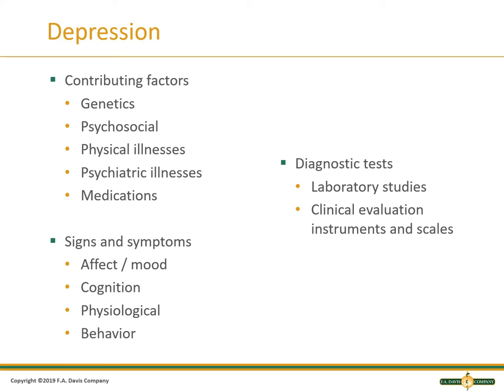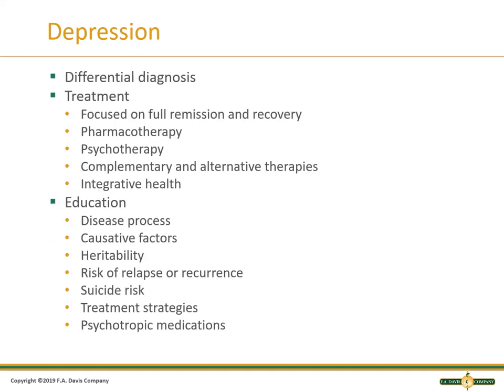We look at signs and symptoms through their affect, their mood, their cognition, and how they behave when we interact with them. Look at lab studies, following their normal routine — electrolyte panels, blood counts, clinical evaluations, scales, different questions, and monitor how they interact with other people. Make sure there's no other differential diagnosis — check thyroid function, make sure it's not decreased or increased. Look at their electrolytes, their liver functions, checking to make sure we don't have a metabolic cause contributing to the depression.